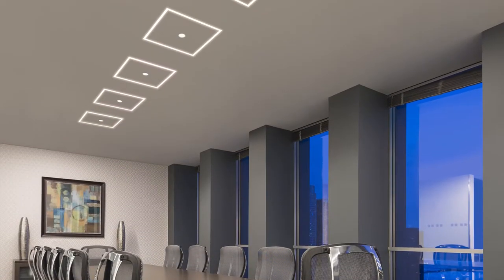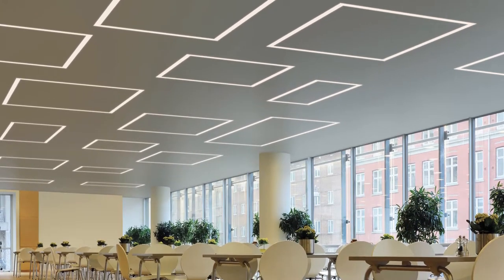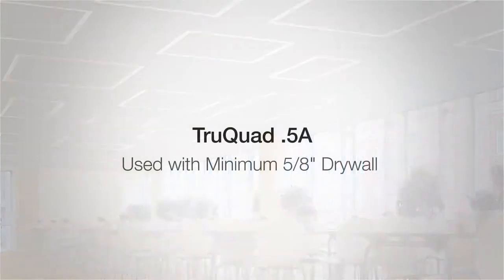TrueQuad systems are pre-cut square or rectangle configurations of TrueLine by PureLighting. This short video will demonstrate the 5 easy steps to install a TrueQuad 0.5A system, recessed within standard 5/8 inch drywall.